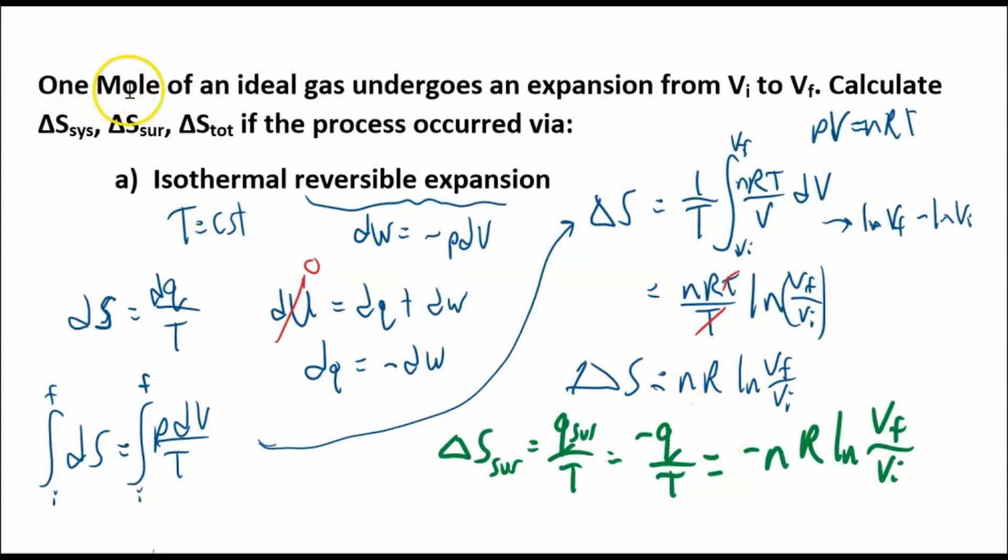So it ends up being negative nR ln of V final over V initial. It's funny, we have one mole of gas. So I guess we'd just plug in one for n. So it'd be R ln Vf over Vi. So that's it. And since this is for the system, this one here, this is for the surroundings. They're equal and opposite, equal and opposite.